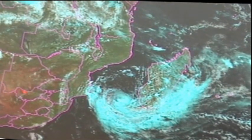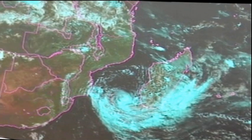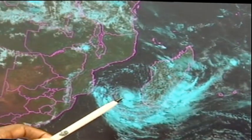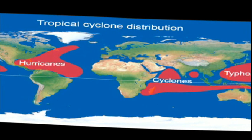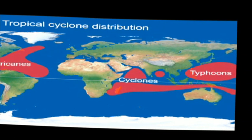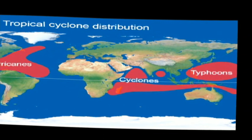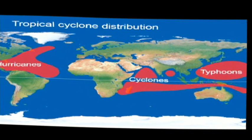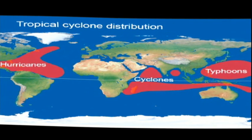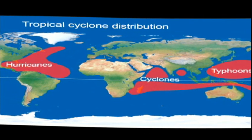In the South Indian Ocean they are referred to as tropical cyclones, such as Dineo. Over the United States they are called hurricanes, while in South East Asia, in places such as India and Japan, they are referred to as typhoons. In Australia, these storms are called willy-willies.